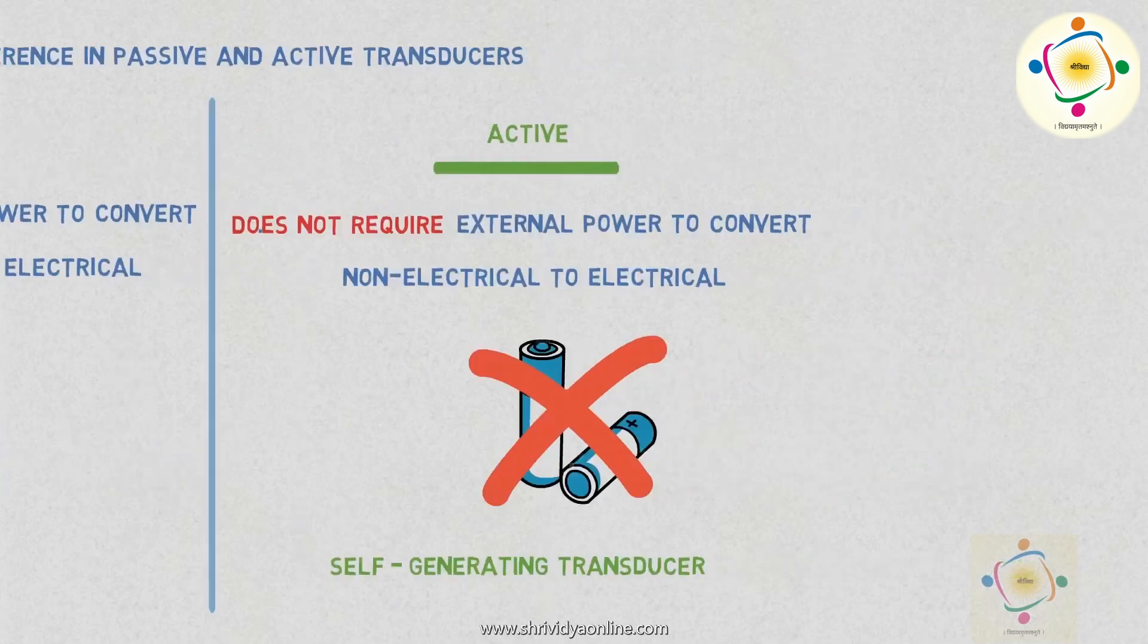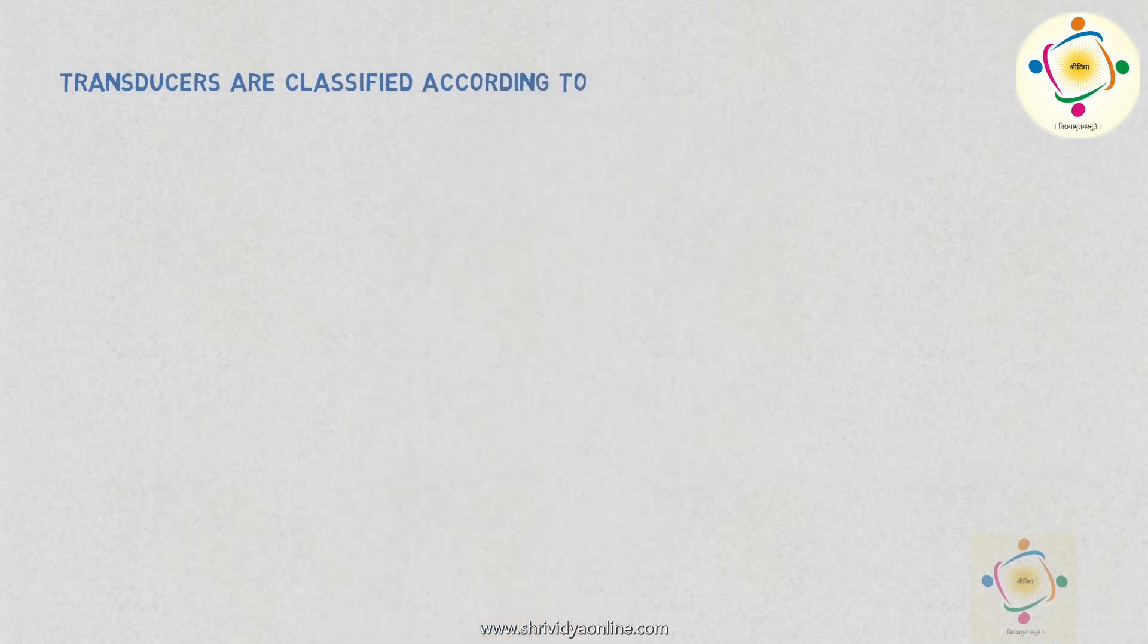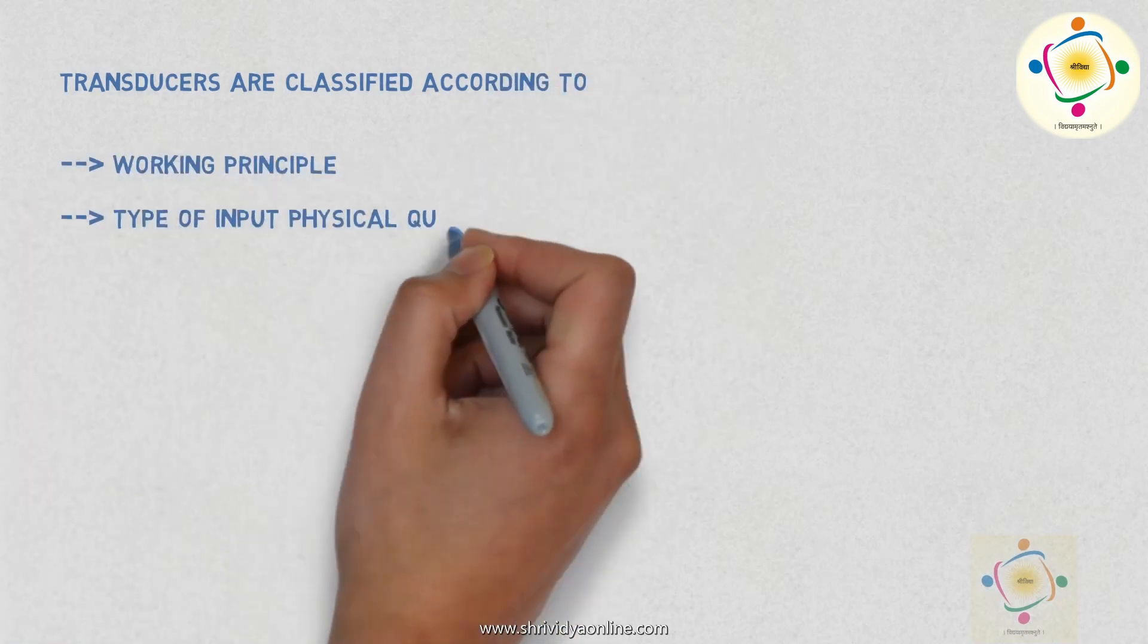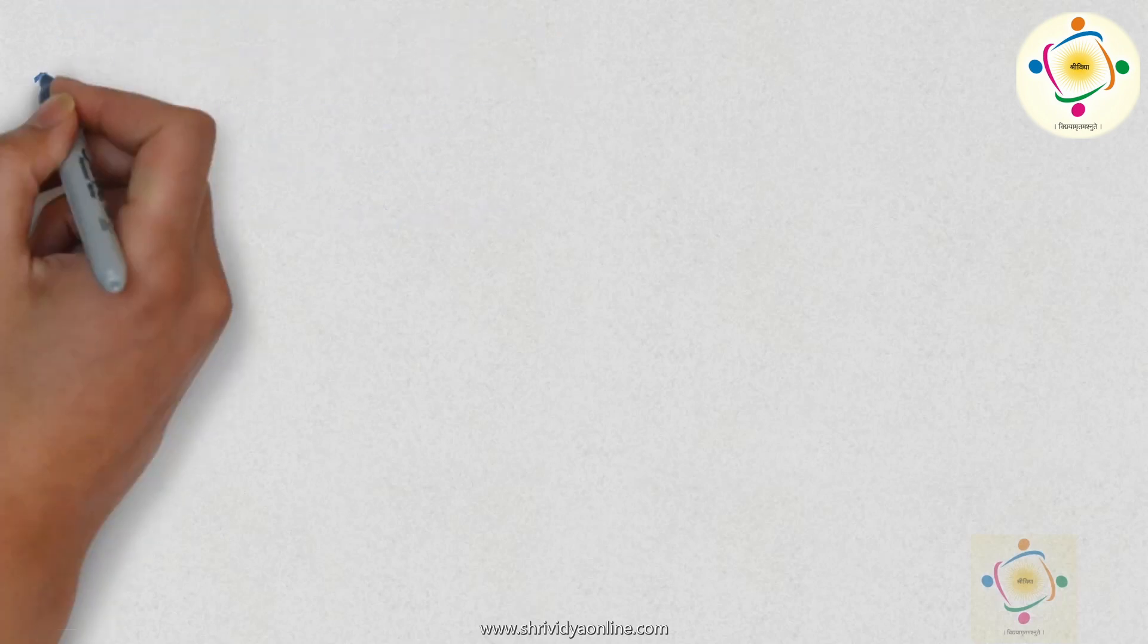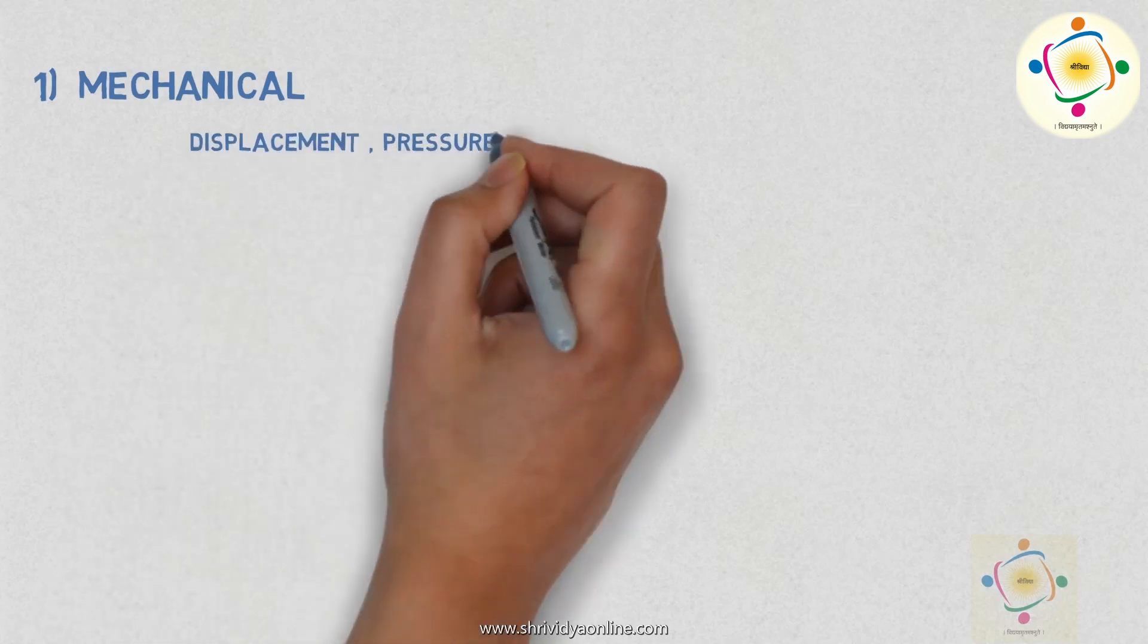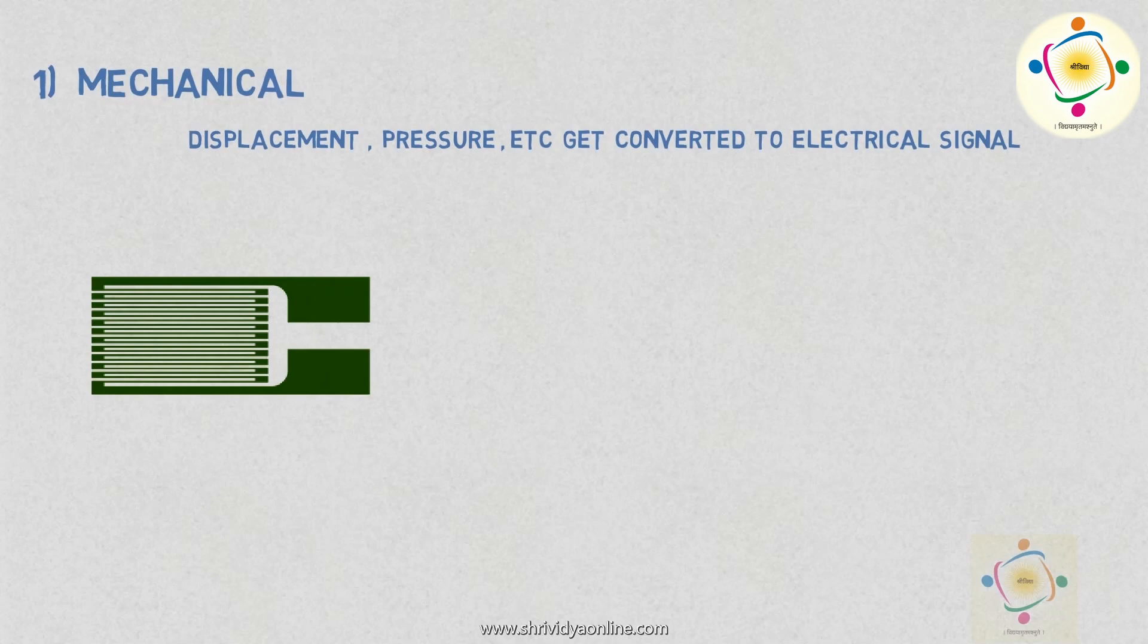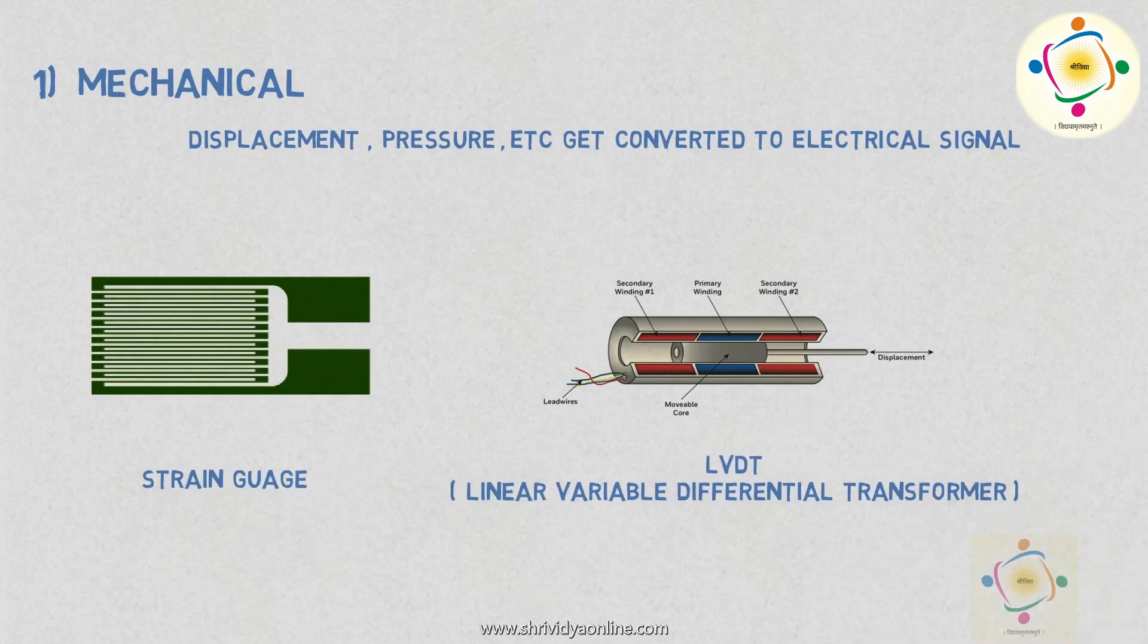In the same way transducers are classified according to their working principle and the type of input physical quantities. The first one is mechanical transducers. Where the displacement or pressure gets converted into electrical quantities. For example strain gauge, LVDT. We will study this in the next couple of lectures.